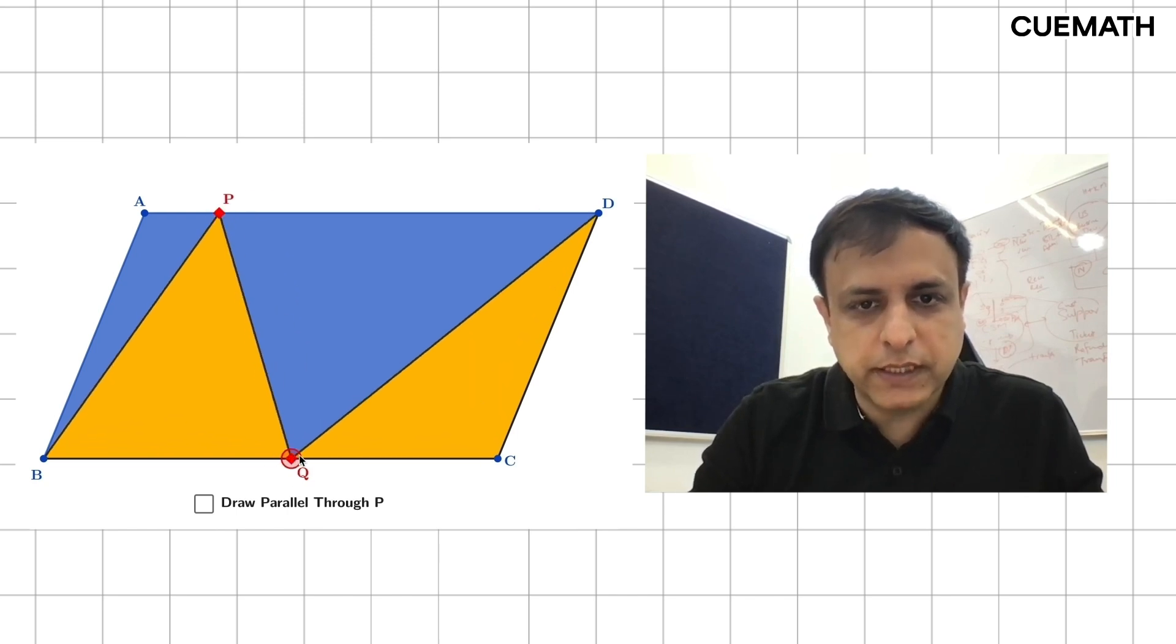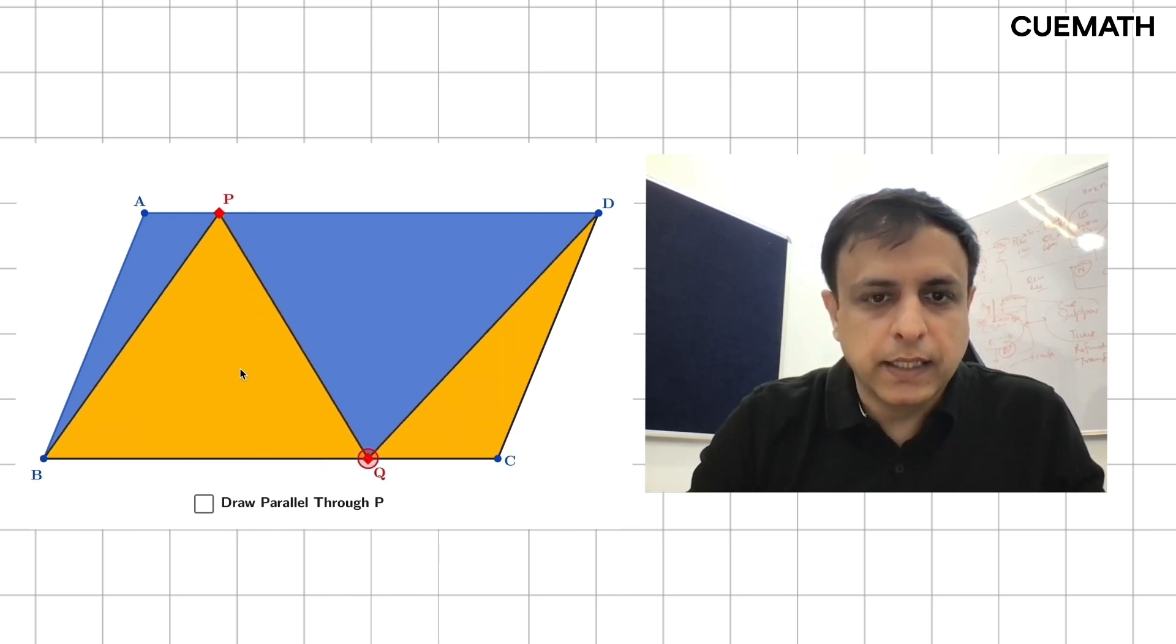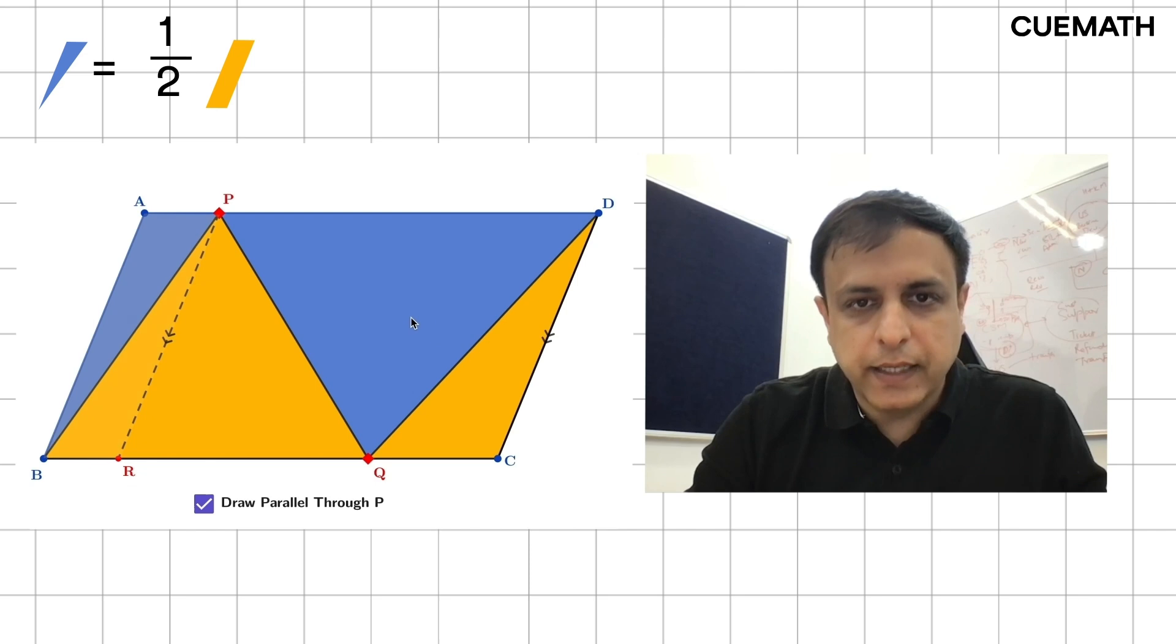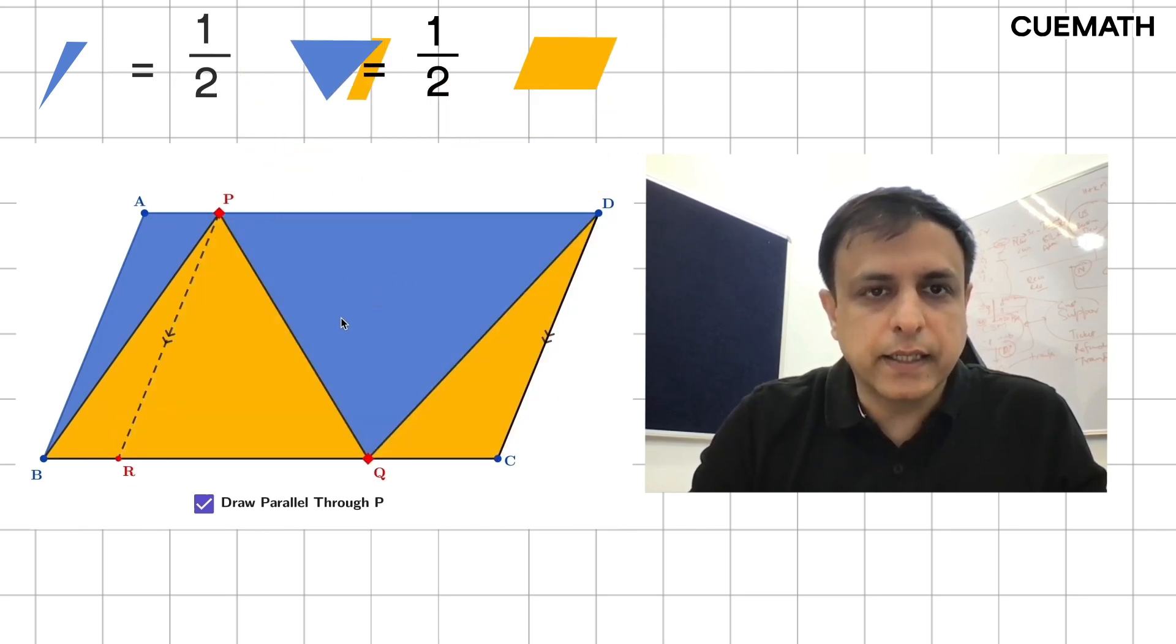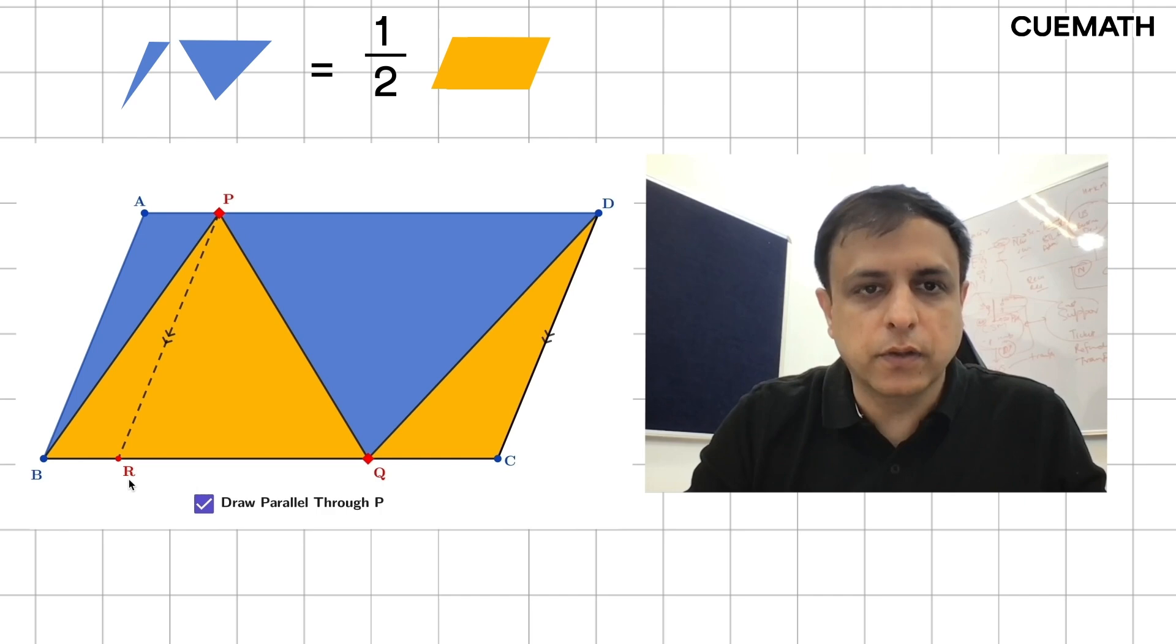then we can draw a parallel through one of the points, and we see that this triangle is half of this parallelogram and this triangle is half of this parallelogram. So the sum of the two triangles is half the area of the overall parallelogram.